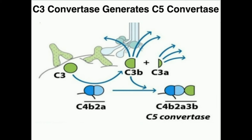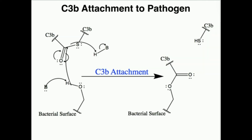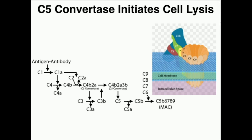Much in the same way that C3 convertase splits C3, C5 convertase — C4B, C2B, C3B — is going to split C5 into C5A and C5B. Much like C3B and C4B, C5B has the same internal thioester bond. Once C5 is split into C5A and C5B, this thioester bond on C5B is exposed and it becomes attached to a bacterial surface protein. You can see C5B right here, now attached to the bacterial surface.